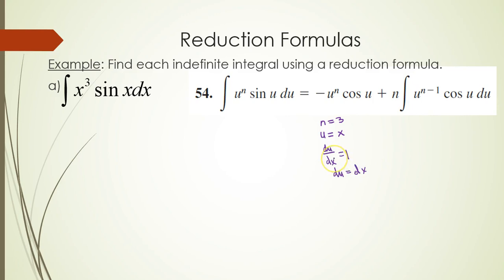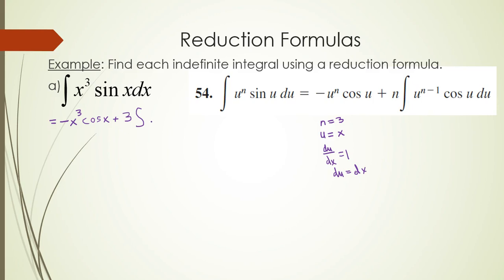So du is the same thing as dx — the two quantities are equal. I can now take x cubed sine of x dx and expand it using the formula. What I have is negative u to the n, so that's negative x to the third power cosine of x, plus n which is 3, times the integral of u to the n minus 1 — that's x squared — and then cosine of x, times du which is dx.